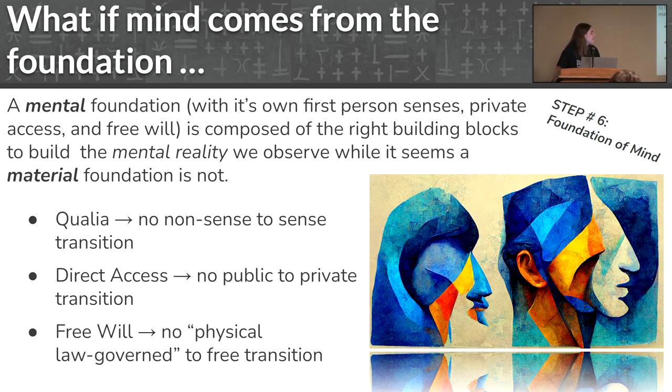And talk to Julie here, who's our professor and expert on that topic. She did her PhD on it. Now, if we suppose that our foundation has a mental characteristic, then it actually makes a lot of sense of these three hard problems because we can avoid the no-nonsense to sense transition, we can avoid the public to private transition, and we can avoid the free will paradox. So it seems like our foundation for the mind does a really good job of solving this issue. As it were, it's a better hypothesis than the alternative.